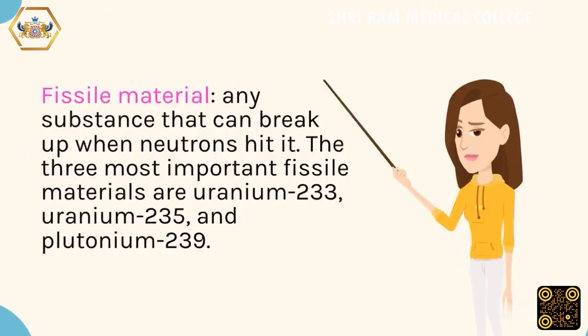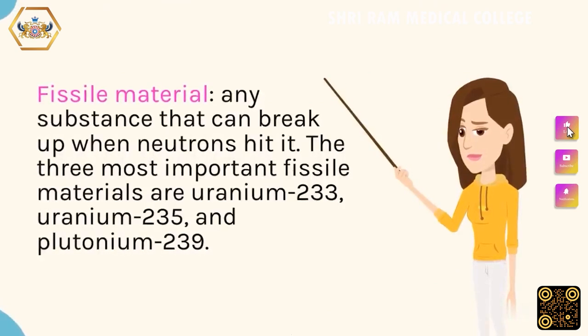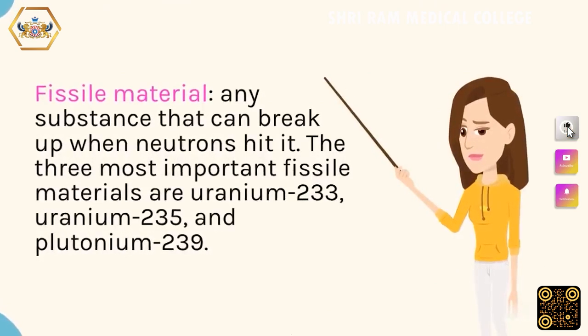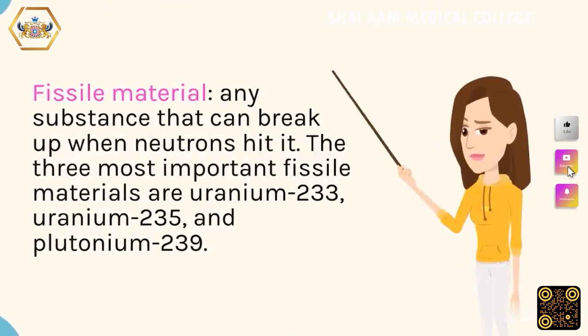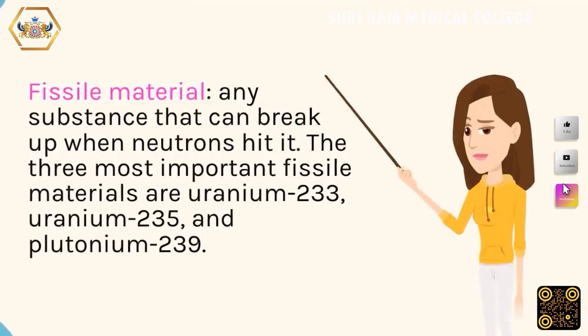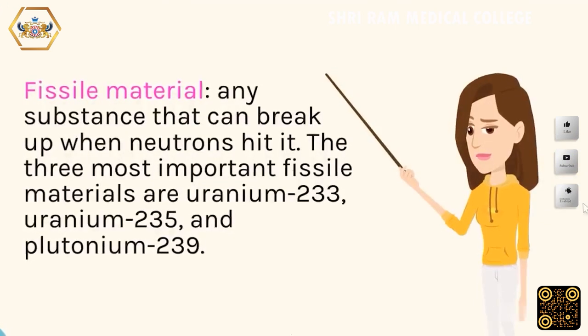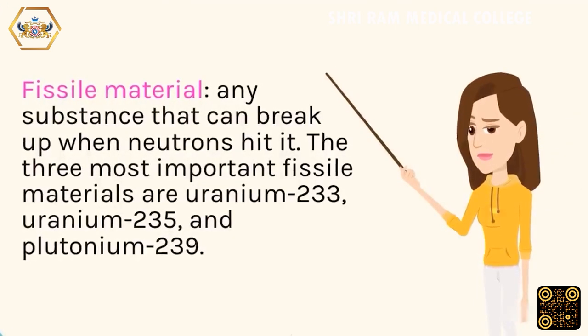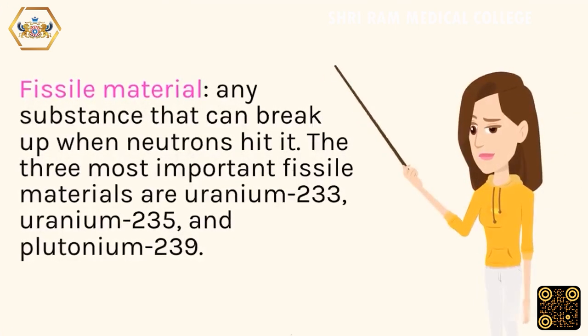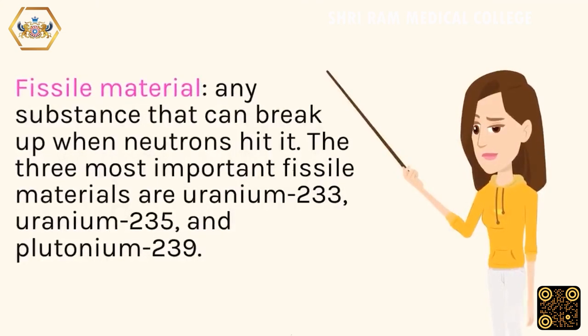Fissile material: any substance that can break up when neutrons hit it. The three most important fissile materials are uranium-233, uranium-235, and plutonium-239.